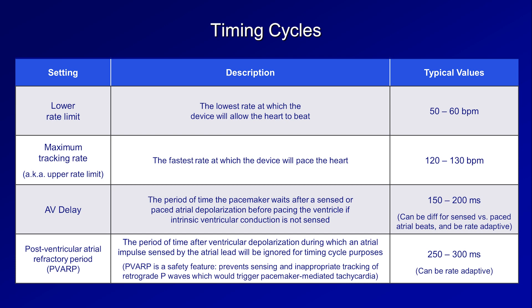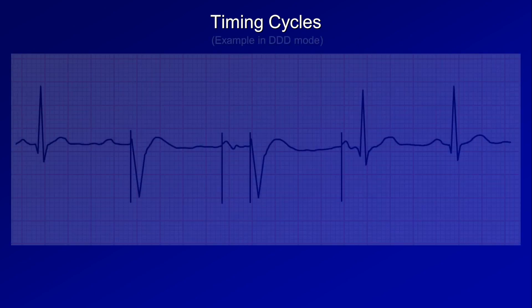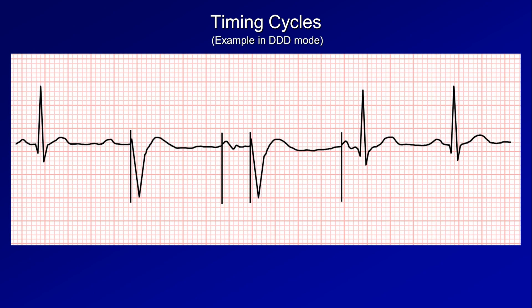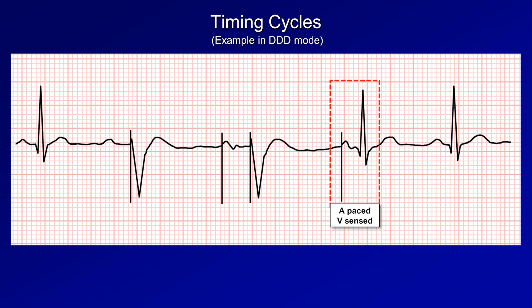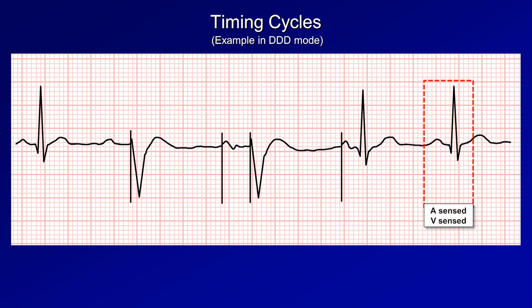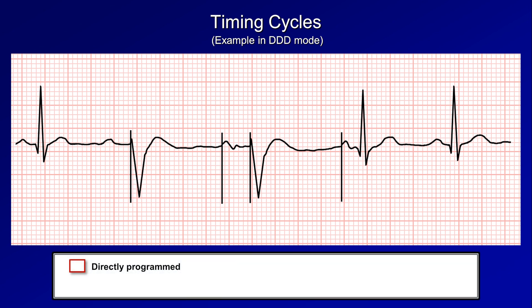Taking a closer look at how these settings determine the timing of cardiac events. Here is an example ECG for a patient in DDD mode, with a mix of A-sensed V-paced, A-paced V-paced, A-paced V-sensed, and A-sensed V-sensed beats. The four timing settings already discussed are directly programmed into the pacemaker, while a few other values are subsequently determined indirectly.